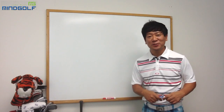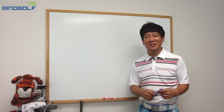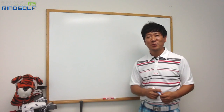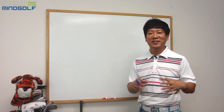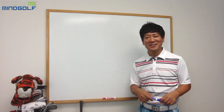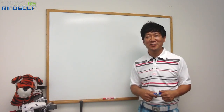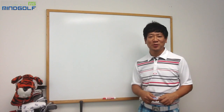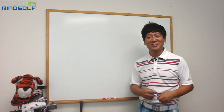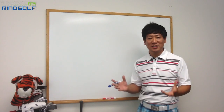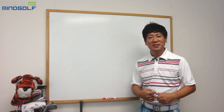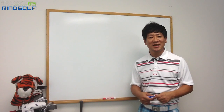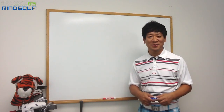마인드골프의 Y골프를 조금씩 보시는 분들이 많아져서 첫 번째 샷 같은 경우는 거의 4000 뷰 정도에 가까워지고 있는데요. 숫자가 꼭 중요한 건 아니지만 많은 분들이 보고 계신다는 것이 강의를 계속하는 원동력이 됩니다. 이번 주제는 스윙 크기와 실제 그 스윙 크기가 얼만큼 힘이 잘 전달이 돼서 비거리에 어떤 영향을 줄 수 있는지, 상관관계에 대해 이야기해 보겠습니다.